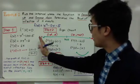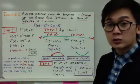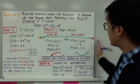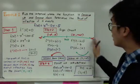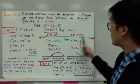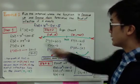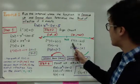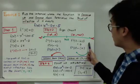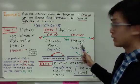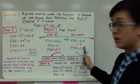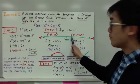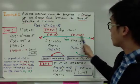Now that we've found the concavity of the first interval, let's find the concavity on the second interval, which is from 0 to positive infinity. Using the same second derivative 6x, I'll use positive 1: 6 times 1 gives positive 6, which is a positive number. Therefore, the concavity is going up on the interval from 0 to positive infinity.